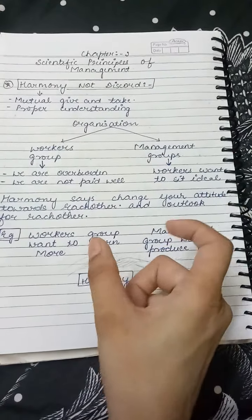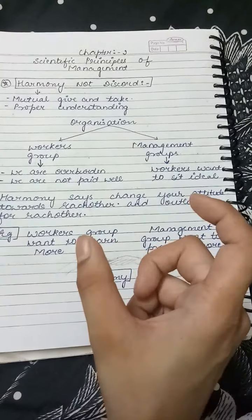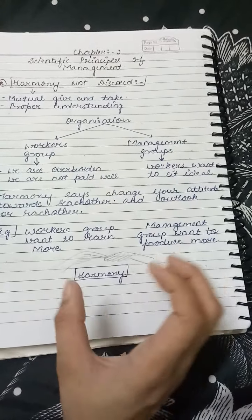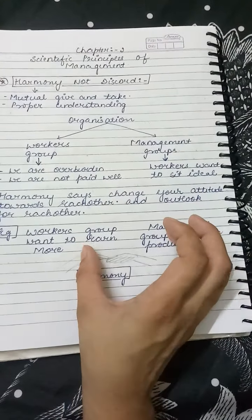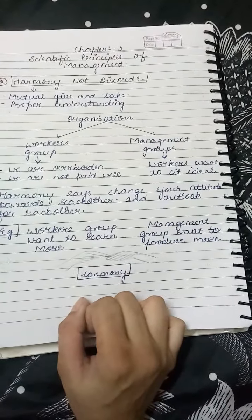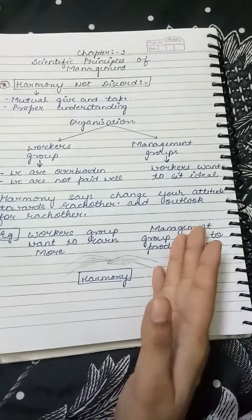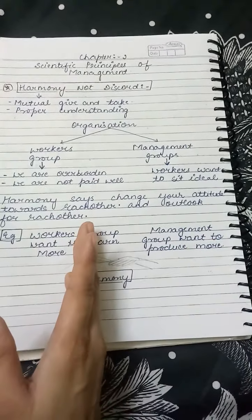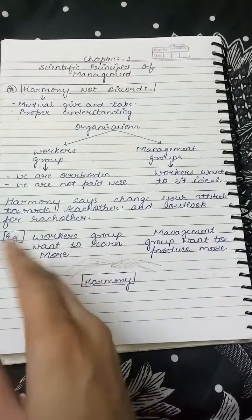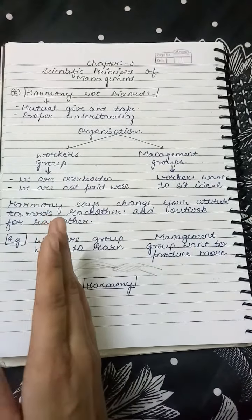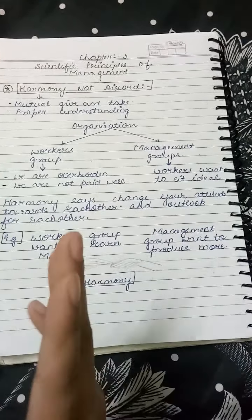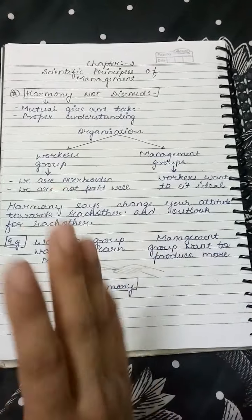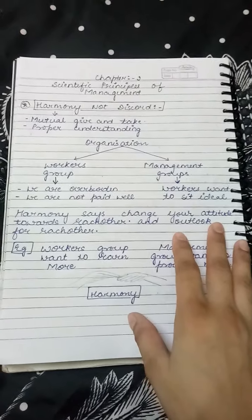Usne kya bola — join your hands. To harmony ne kya bola: joining your hands with each other is harmony. Matlab ek proper understanding ke saath aapko kaam karne ki zaroorat hai. Worker ko ye samajhne ki zaroorat hai ki management hume overburden nahi kar raha. Management ko ye samajhne ki zaroorat hai ki workers ki bhi apni needs hain, apne objectives hain. To unhe fulfill karne ke liye hum logon ko work karna hai.